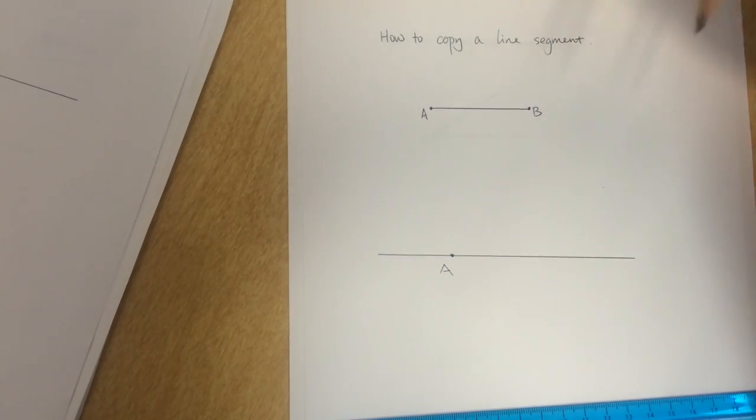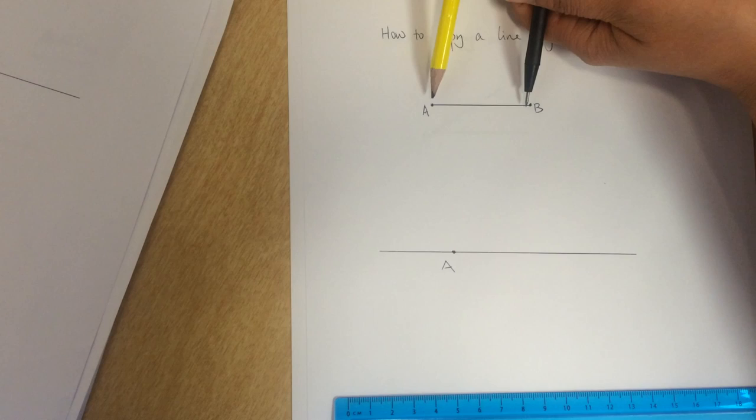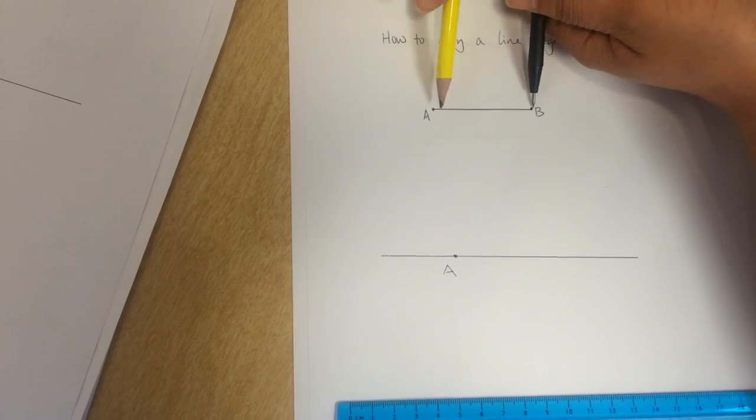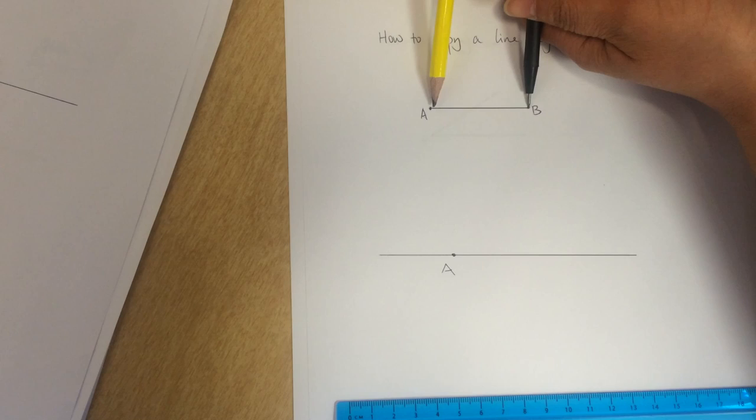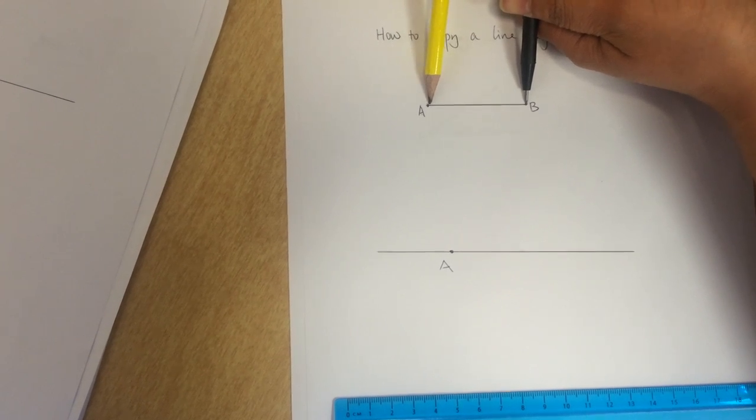And then the next step is to use the compass to measure the distance between A and B. So our radius is exactly the same as the length of AB.